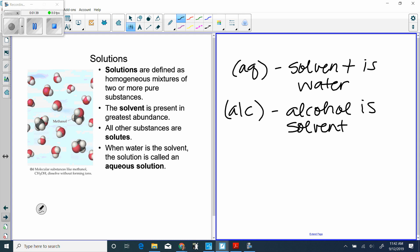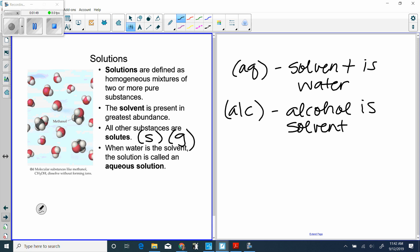The part that's in the lesser amount is called the solute. A lot of times our solute is a solid, it's a powder that we're mixing in the water, but it doesn't have to be. It could be a gas, like your soda. The solvent is the water, the solute is a carbon dioxide gas. The gas is dissolved into the water. Okay.